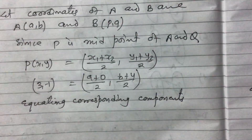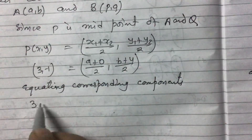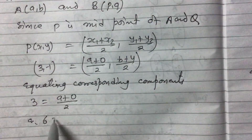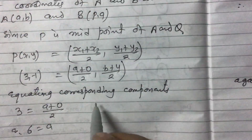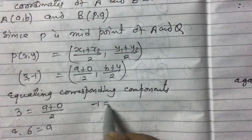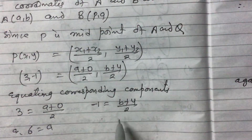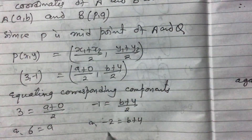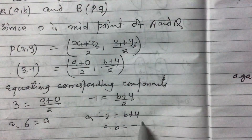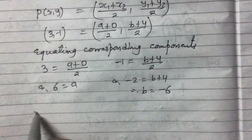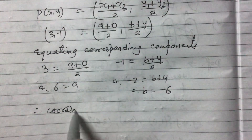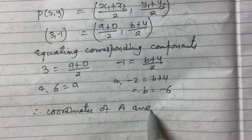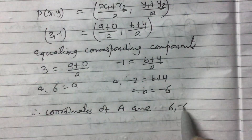Equating corresponding components: 3 equals a plus 0 divided by 2, so 6 equals a. And minus 1 equals b plus 4 divided by 2, so minus 2 equals b plus 4, therefore b equals minus 6. So the coordinates of A are (6, -6).